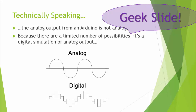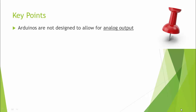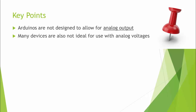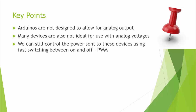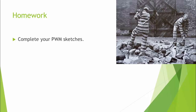To wrap up: Arduinos aren't designed for true analog output, but that's okay because many devices we use wouldn't accept analog output anyway. We can still control power going to these devices — get a 'maybe' out of them — by using the built-in pulse width modulation function for fast switching between on and off. We do this with the analogWrite command, specifying the pin and the duty cycle value. For homework, please complete those PWM sketches and feel free to go online to check out references for pulse width modulation. Thanks very much, and have a great night.